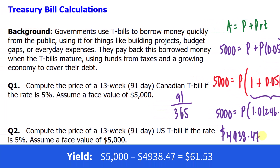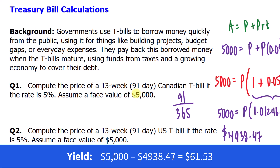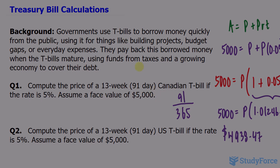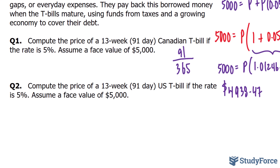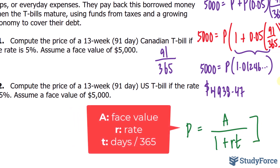If you take the difference between $4,938.47 and $5,000, you'll find out how much you have earned as a result of buying this T-bill. If you want to calculate this quickly, simply use the formula P = A / (1 + RT), which summarizes all the algebra we did to reach that answer.